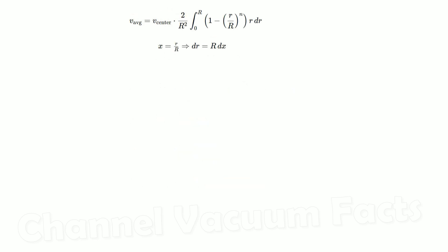You can solve this integral using substitution to find an expression for the average velocity in terms of the maximum center velocity, and therefore for the ratio of the two, which is our correction factor.